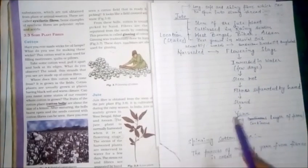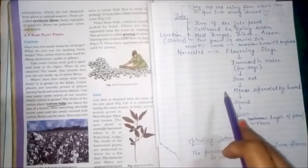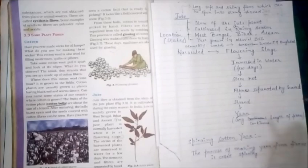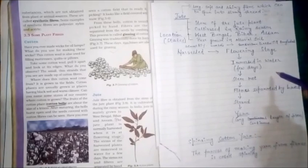Let us understand how we obtain jute fiber from the jute plant. Jute is normally harvested during its flowering stage. The stems of the harvested plants are then immersed into water for few days. When the stems rot, the fiber is separated by hand-picking method.